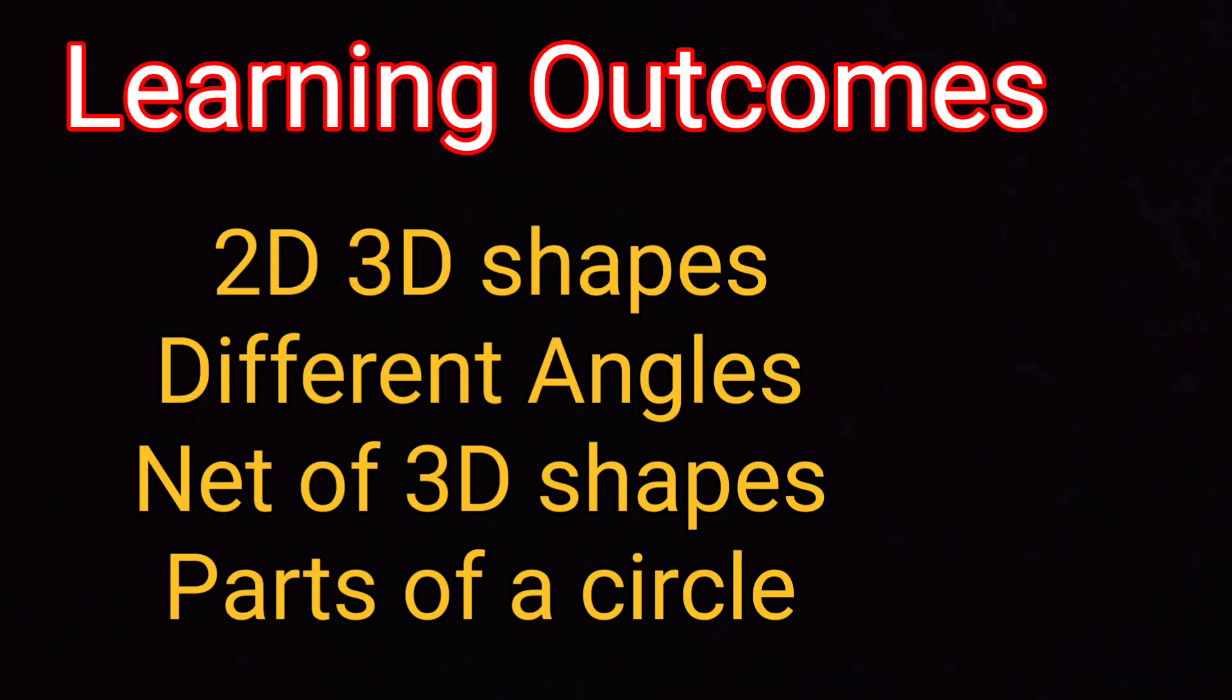So, by the end of this chapter, you should be able to identify all the 2D shapes, 3D shapes, the different angles, acute angle, obtuse angle, right angle, the nets and the related 3D shapes, circle and the different parts of the circle. I hope you find this video helpful. Thank you.